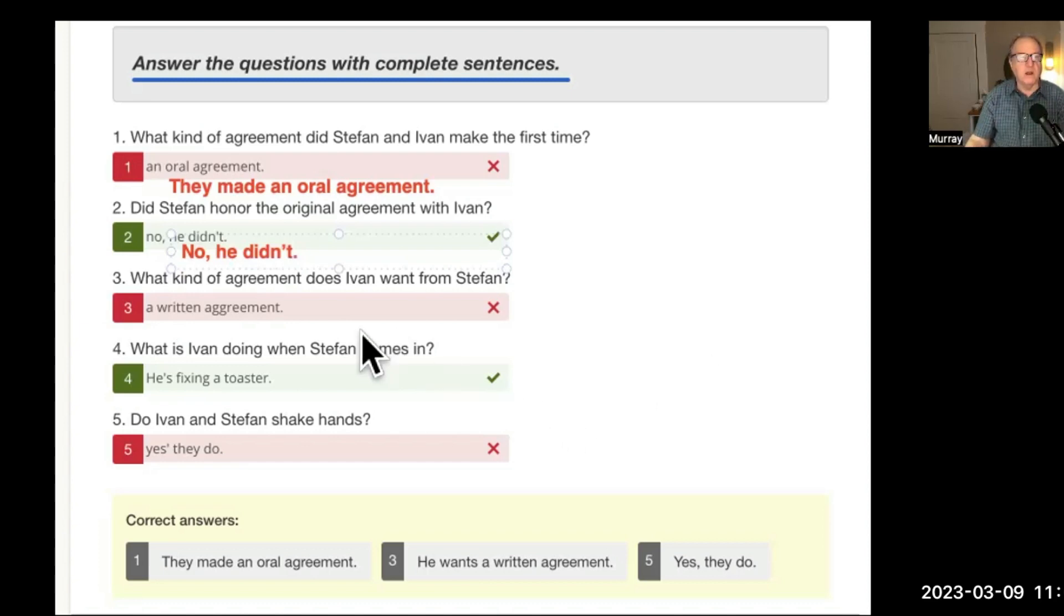What kind of agreement does Yvonne want from Stephan? And again, this is what kind of agreement, this is does, that's in the present tense. So, what kind of agreement does Yvonne want from Stephan? He wants a written agreement. Again, just to make it into a complete sentence, he wants a written agreement. Notice this one, because the question is asked in the present, the answer is he wants. This one is asked in the past, what kind of agreement did Stephan? And they made, this is in the past, they made an oral agreement.